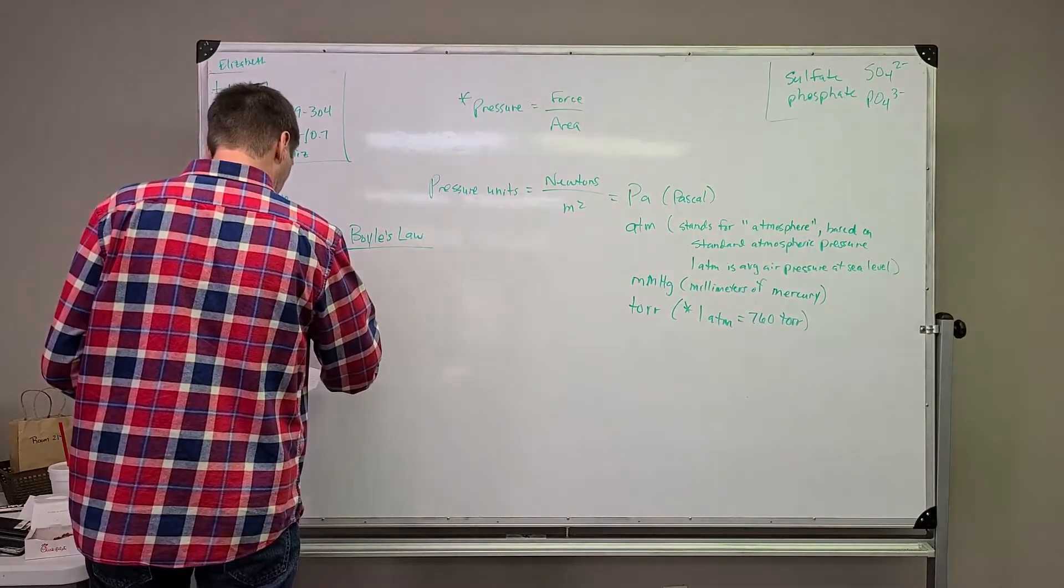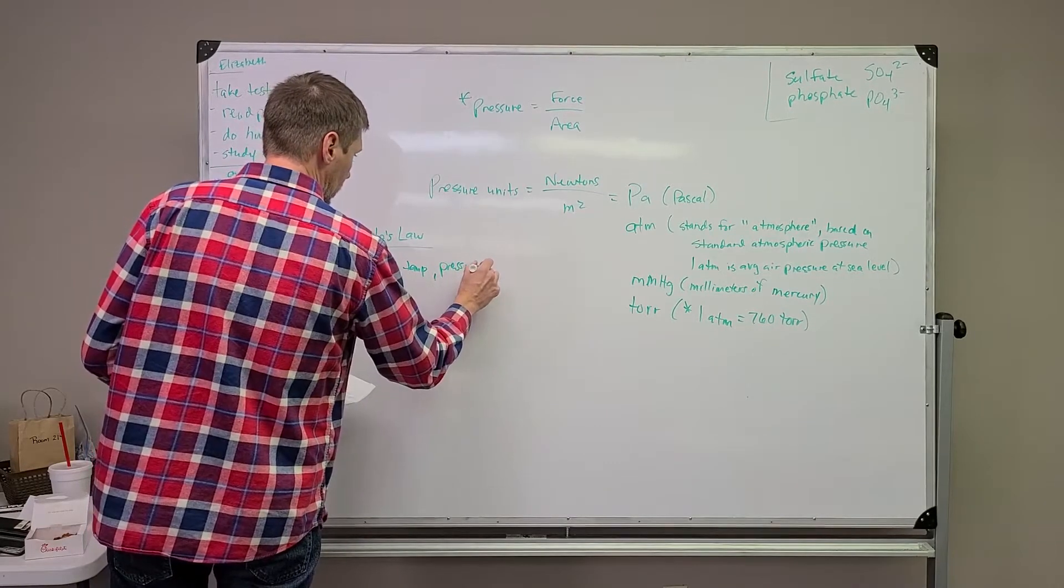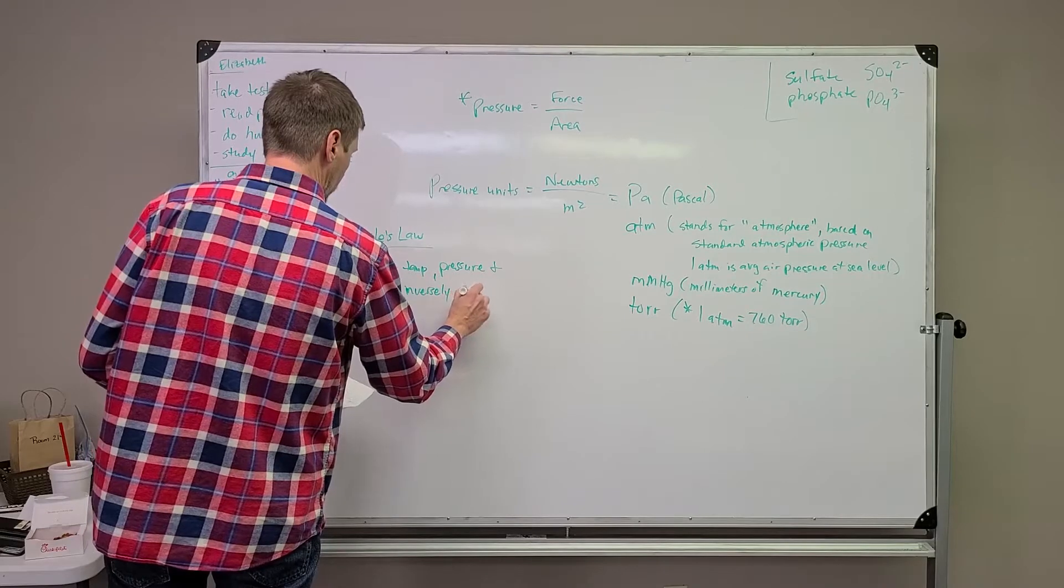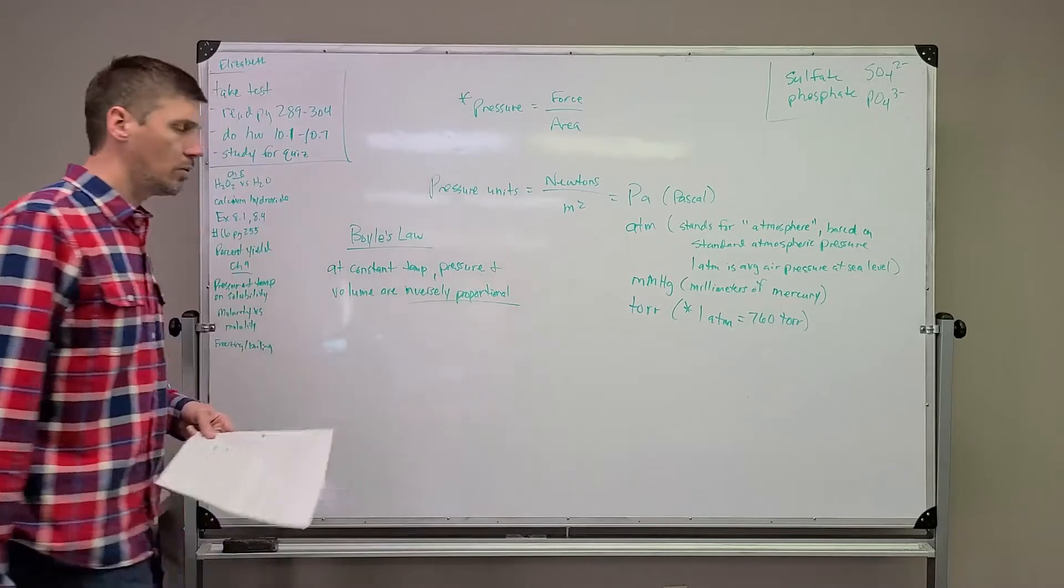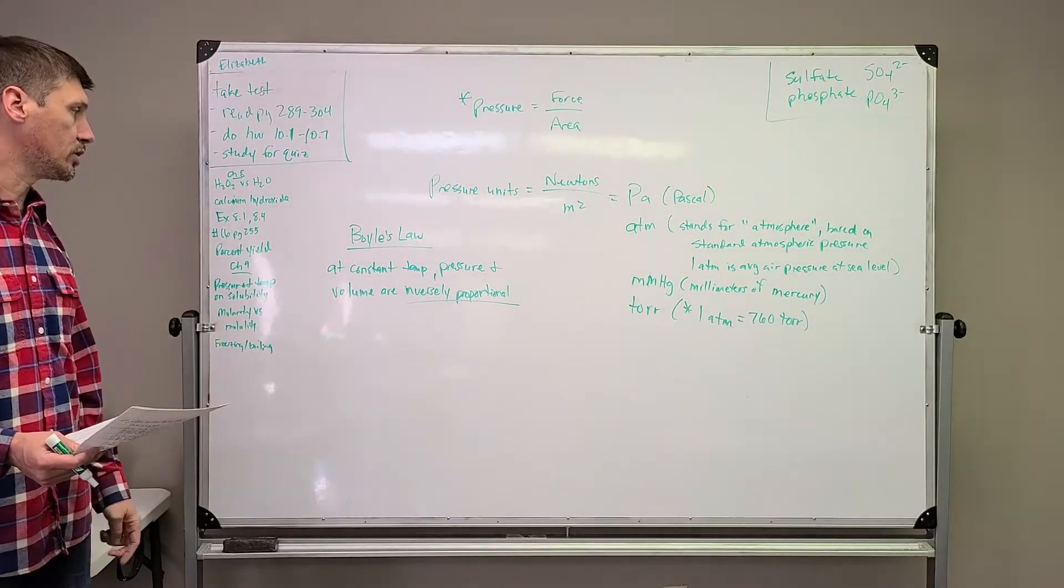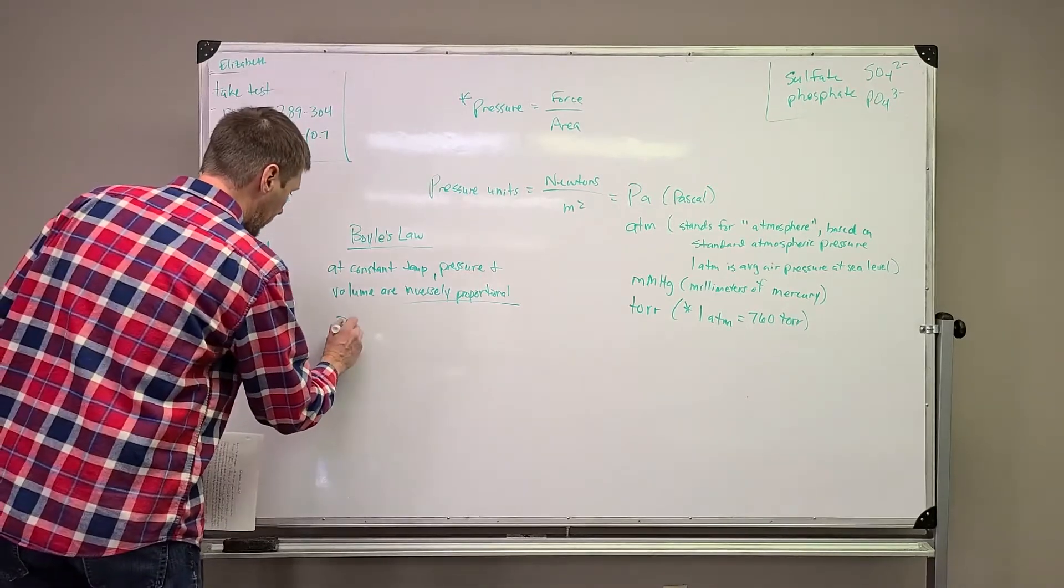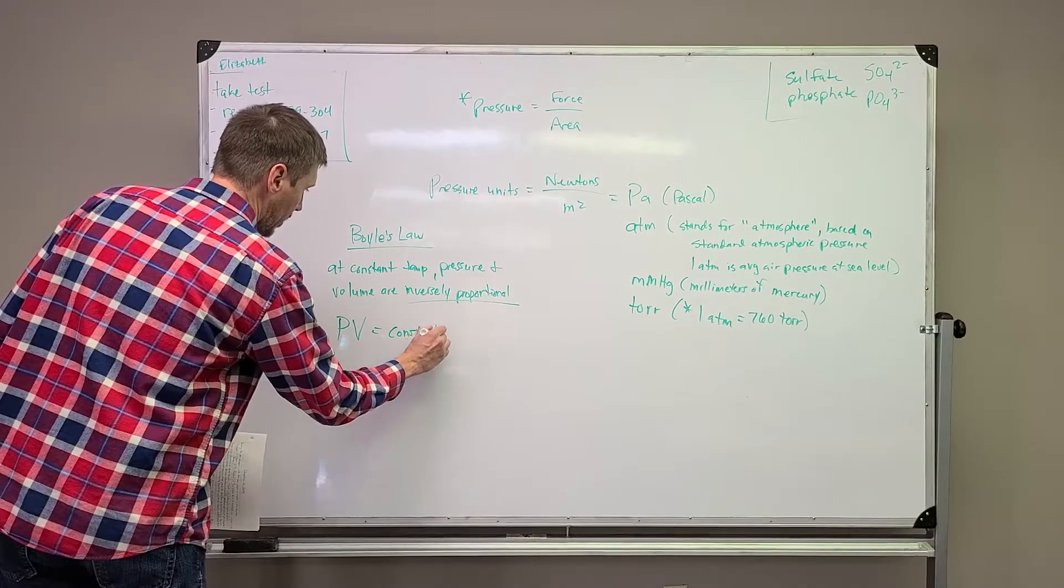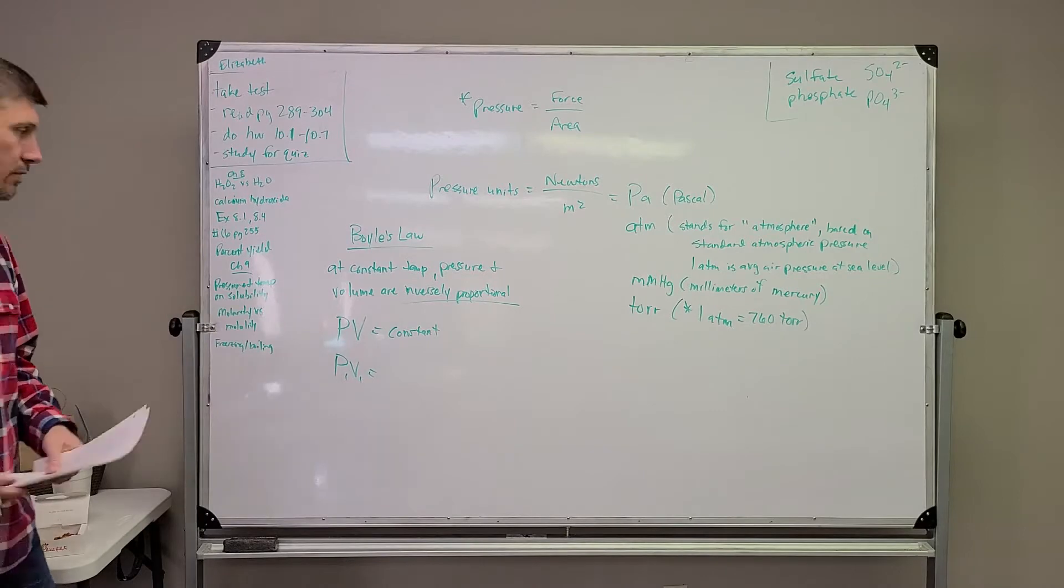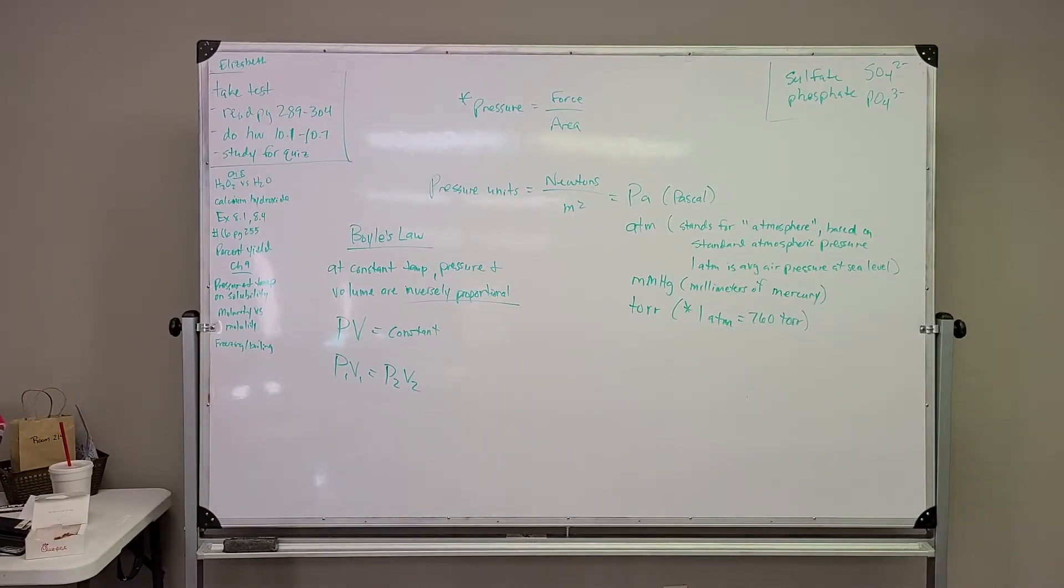Boyle is basically credited with this law here, which says that at constant temperature, pressure and volume are inversely proportional. By inversely proportional, we mean that as one goes up, the other one goes down and vice versa. So Boyle's law says that pressure for a given gas, pressure times volume equals a constant. Or said another way, for a given gas at a constant temperature, P1 times V1 equals P2 times V2.